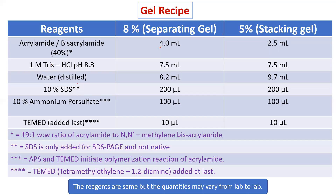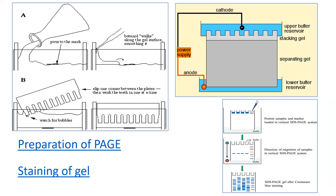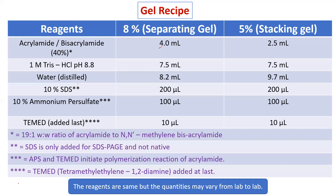TEMED promotes polymerization and APS initiates polymerization — they are usually added last. As soon as you add them, you must immediately pour the mixture into the mold. Before mixing the reagents, prepare the gel unit: there are glass plates with a spacer between them to create a gap for the gel film. Fix them in the casting unit, check for leaks using water, and if not leaking, you are good to go. Now start casting the gel.